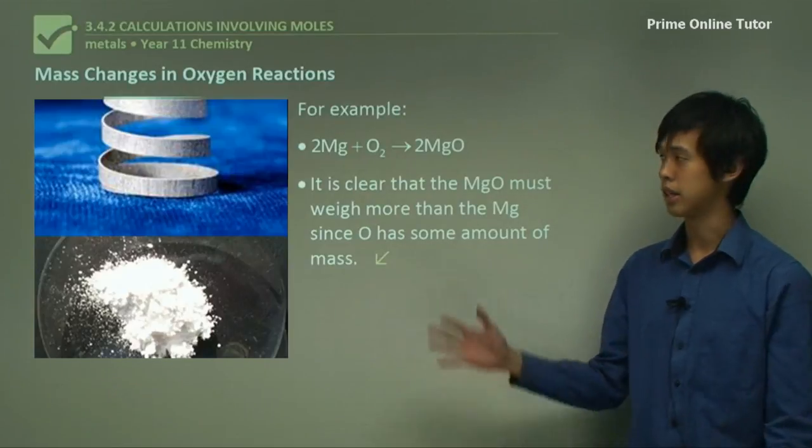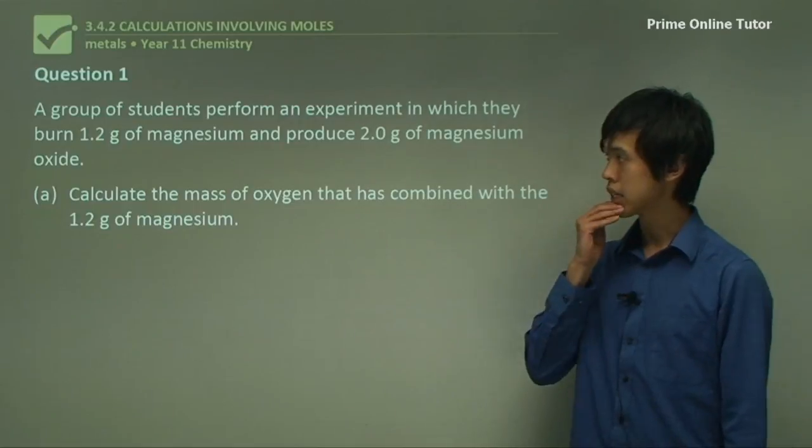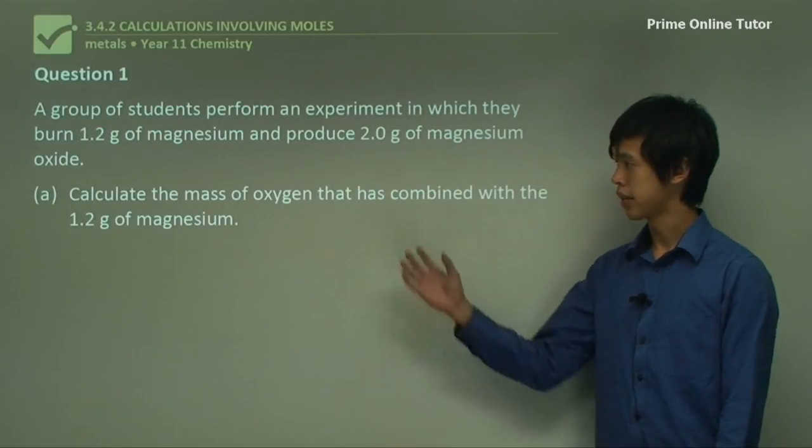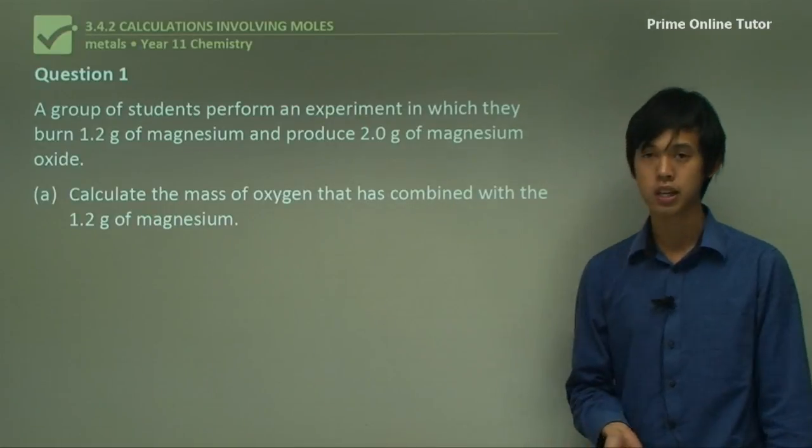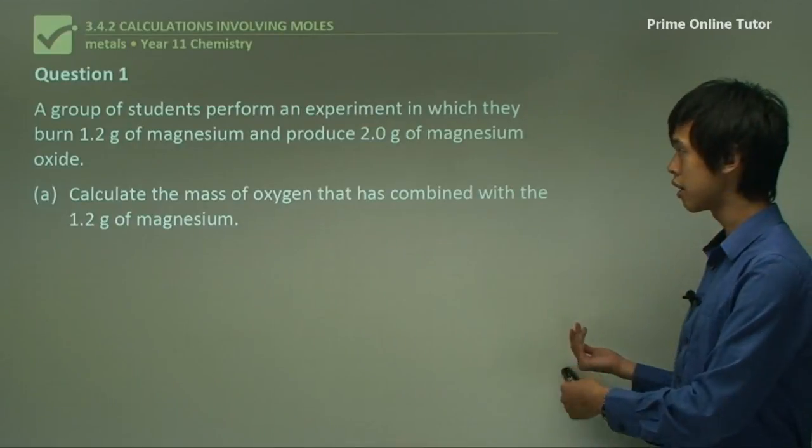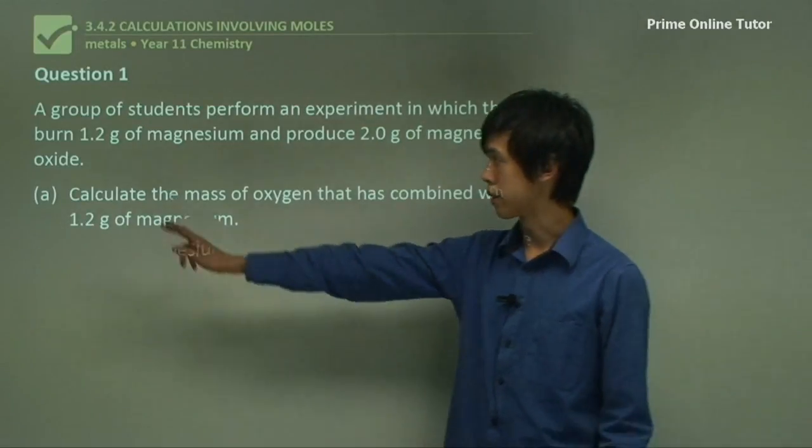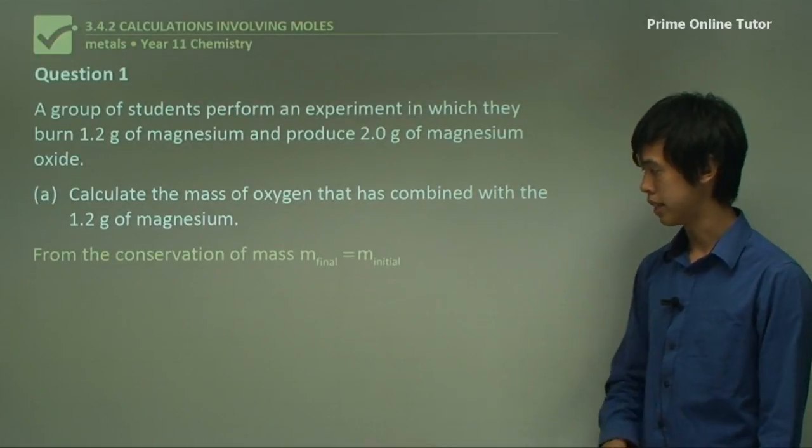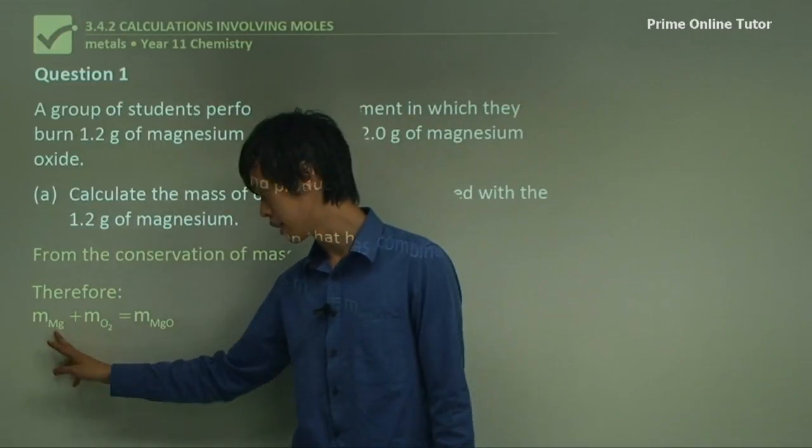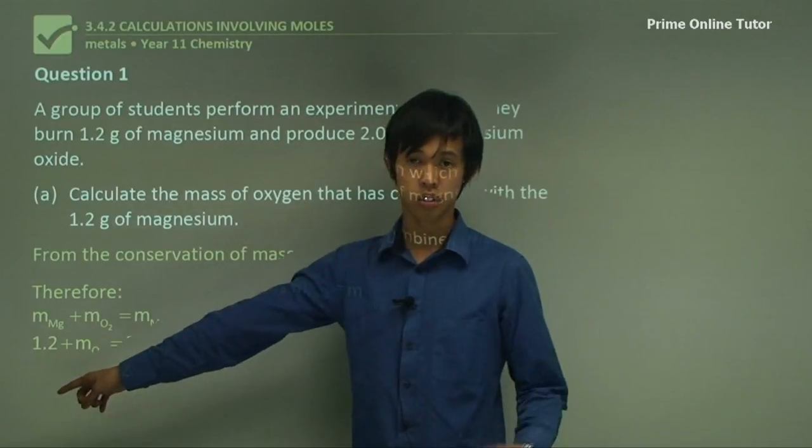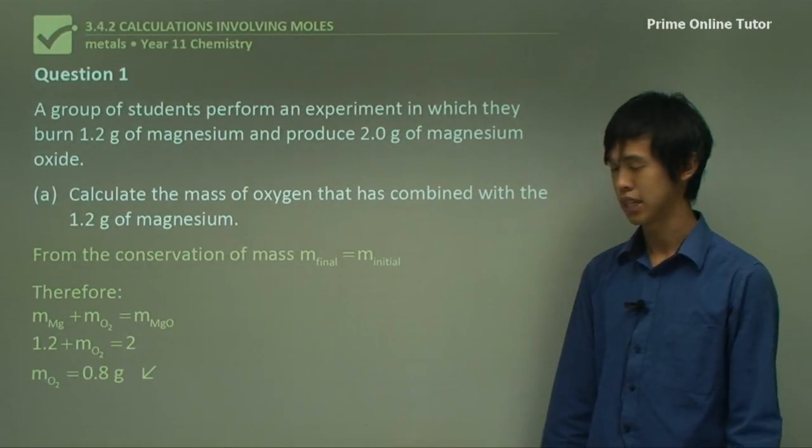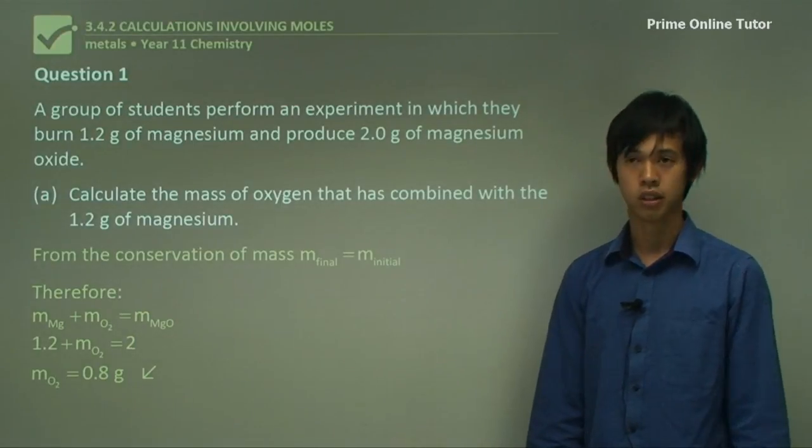A group of students perform an experiment in which they burn 1.2 grams of magnesium and produce 2 grams of magnesium oxide. Calculate the mass of oxygen that has combined with the 1.2 grams of magnesium. Well, conservation of mass tells us that the mass of the reactants going in has to equal the mass of the products coming out. The mass of the product is 2 grams. The mass of the magnesium is 1.2 grams. So the mass of the magnesium oxide equals the mass of the magnesium plus the mass of the oxygen. And so this is simple arithmetic. 1.2 plus MO₂ equals 2, so the mass of the oxygen has to equal 0.8 grams.